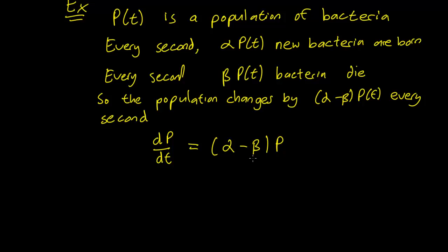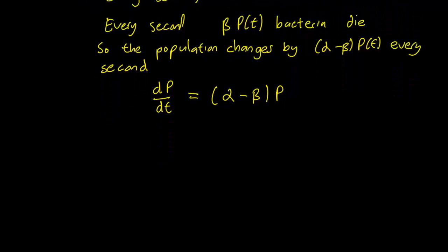And this changes by alpha minus beta P. And this is, in fact, the differential equation that the population function will solve. And if you have appropriate initial conditions, you can use this differential equation to write down, predict, the population of bacteria in a given time. So that's one application of this growth decay equation.